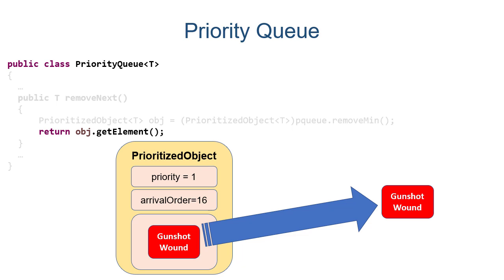Hopefully this gives you an idea of how priority queues work. They're a very important application for a heap data structure. The combination of using a wrapper class with a heap gives us some pretty amazing functionality without having to write a bunch of additional code.